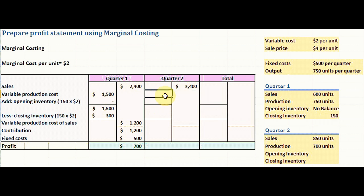Now we calculate the variable production cost for quarter two. Production units for quarter two are 700 units. We multiply 700 by the variable cost of $2 per unit, giving a variable production cost of $1,400.